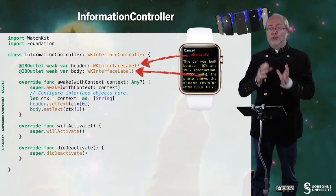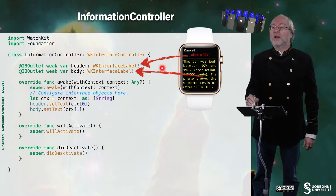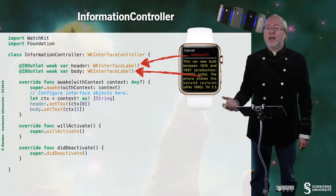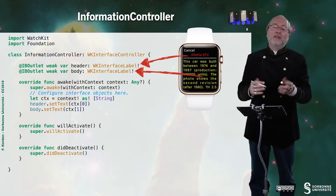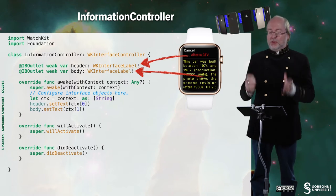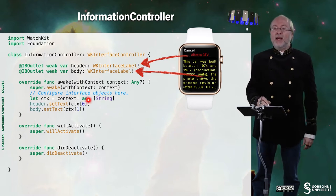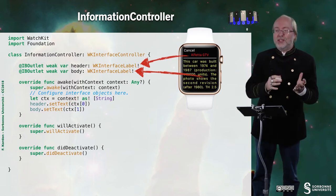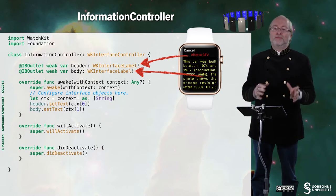Let's have a look at the information controller. It's also a WKInterfaceController, associated to the other storyboard interface. The first label is the title label, and the second label allows multi-line display. When awakeWithContext is called, there is a context — it was passed in from the previous function. The context is typed as Any?, but I know it's actually an array of two strings, so I convert it accordingly. Then I set the first label with the first string and the second label with the second string. I don't need to implement willActivate or didDeactivate for this controller.